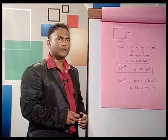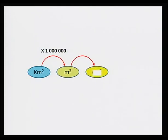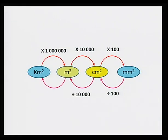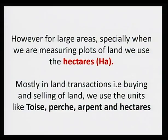Now let's see how to convert between the different units of area. To convert kilometers squared into meters squared, we multiply by 1 million. To convert meters squared to centimeters squared, we multiply by 10,000. To convert centimeters squared to millimeters squared, we multiply by 100. Moving backward: to convert millimeters squared to centimeters squared, we divide by 100; from centimeters squared to meters squared, we divide by 10,000; from meters squared to kilometers squared, we divide by 1 million. In land transactions, most people in Mauritius use units like twas, pairs, arpa, or hectares.